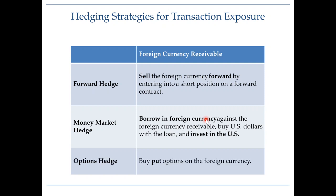The third hedging strategy is an options hedge. Remember that our focus is on the rate at which we will exchange pounds into dollars — we will have pounds in one year and need to sell them for dollars. So we buy put options, which give us the right but not the obligation to sell pounds at the strike price of $1.50. For a foreign currency receivable, we buy put options rather than call options.